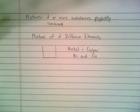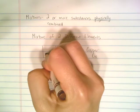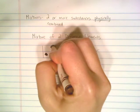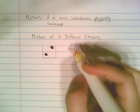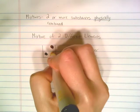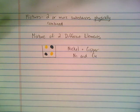What that would look like is you'd have individual dots of nickel in the same container as individual dots of copper, but they wouldn't be connected to one another. That would be a chemical bond.